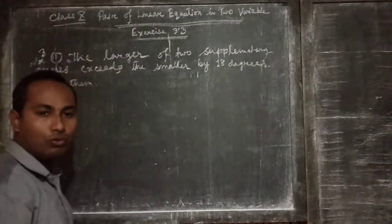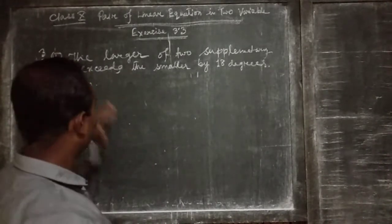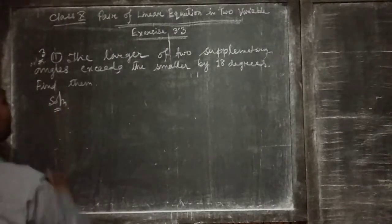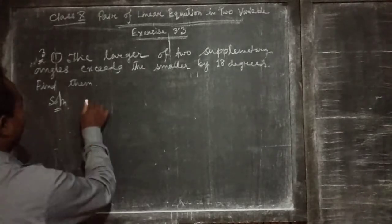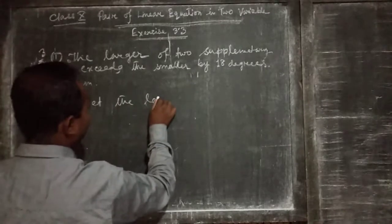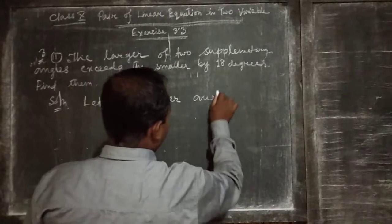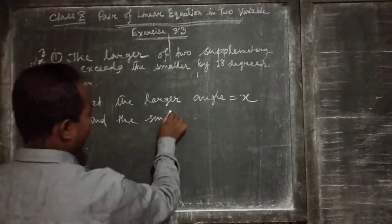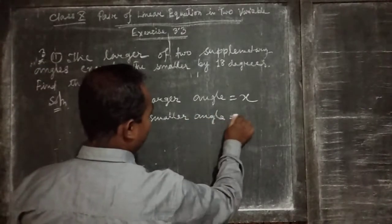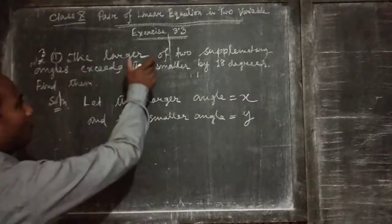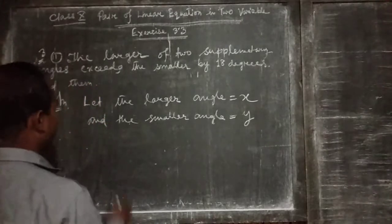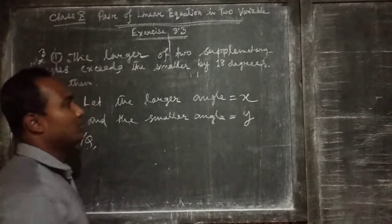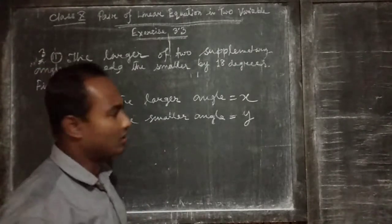One angle is larger and one angle is smaller. We have to find out the two angles, and we will consider two variables for these two angles. Now we start the solution. Let the larger angle be x and the smaller angle be y.